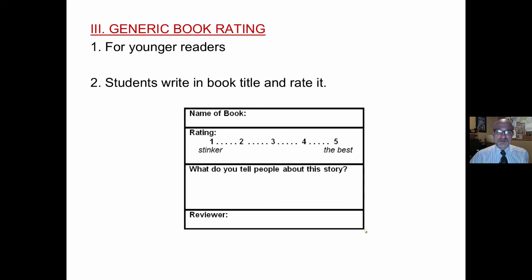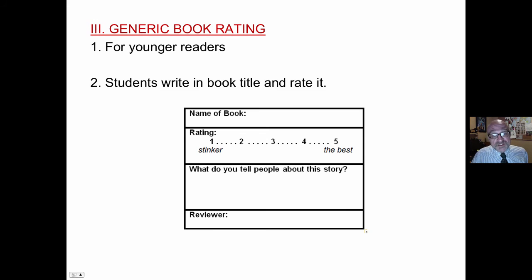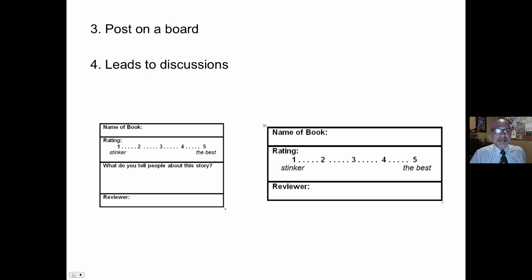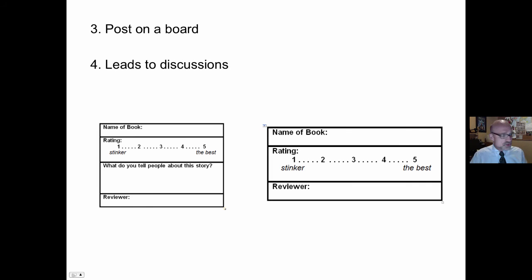A generic book rating for younger readers: simply write in the title of the book and rate it from 'stinker' to 'the best' — you can use a scale of one to three, one to five, or one to ten. You might also ask, 'What do you want to say about this story?' For younger readers, they don't even have to write — they can just rate the book with the name and the reviewer. Put these on a bulletin board; it leads to discussions as students see what others have rated.